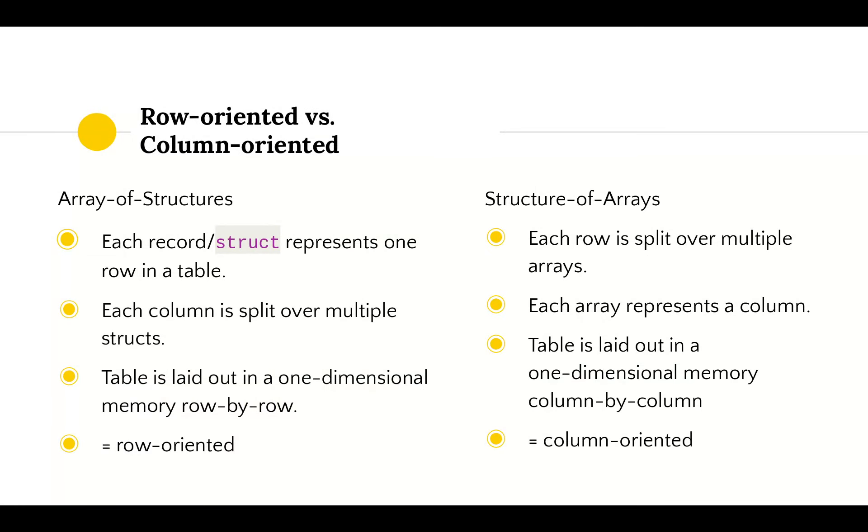Now let's relate what we've just learned to the terms row-oriented and column-oriented. For array of structures, each record or C++ struct represents one row in a table. Each column is split over multiple structs and the table is laid out in one-dimensional memory row by row, therefore we call this row-oriented. For structure of arrays, each row is split over multiple arrays and each array represents a column. The table is laid out column by column, therefore we call this column-oriented. This terminology applies not just to data in RAM but also to file formats—CSV files are row-oriented, but Apache Parquet files are column-oriented.